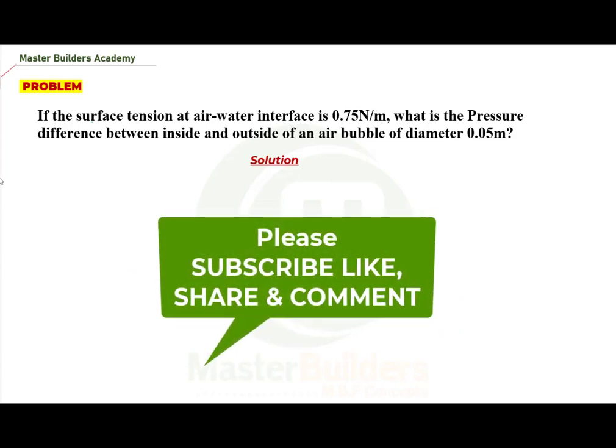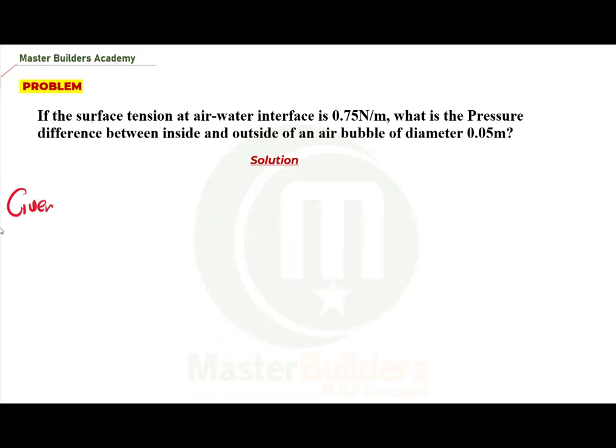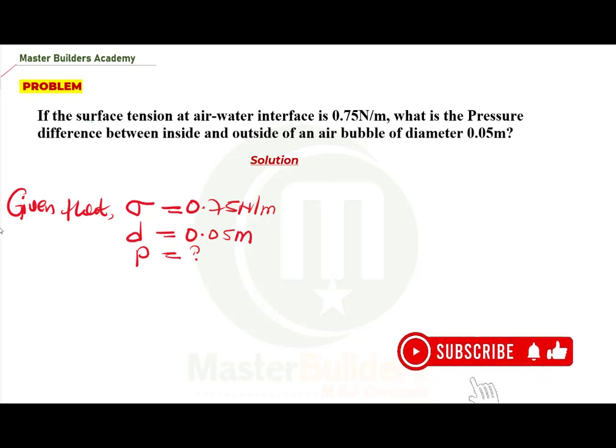Now in this case we'll be using the symbols. Surface tension σ = 0.75 Newton per meter, then diameter d = 0.05 meter, then pressure is unknown. So what do we do? The next thing we quickly do...